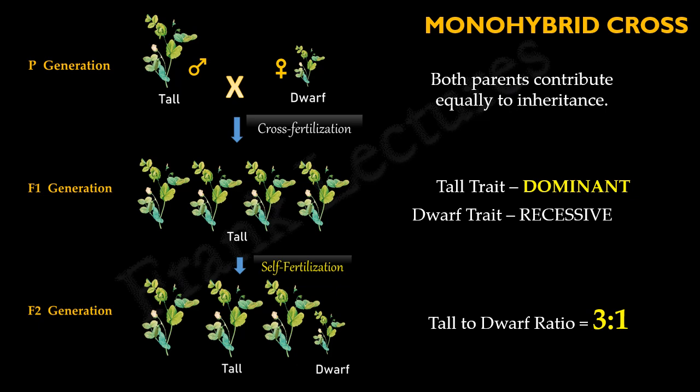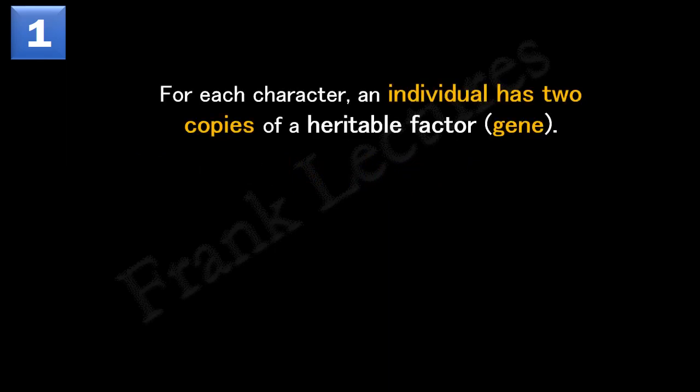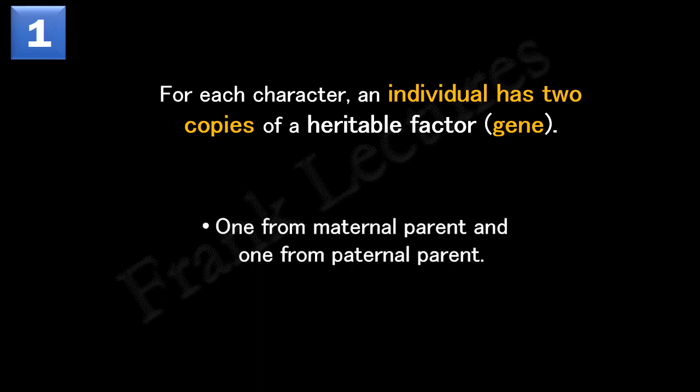Keeping these observations in mind, let's now understand the four main hypotheses proposed by Mendel. According to Mendel's first hypothesis, for each character an individual has two copies of a heritable factor. Since today we know heritable factors are actually genes, we will use the term gene. For each character, an individual has two copies of a gene — one inherited from the maternal parent and one from the paternal parent.